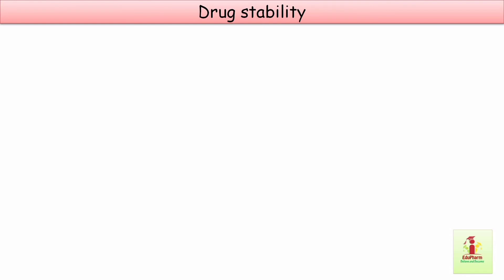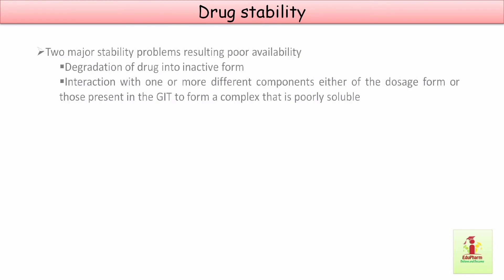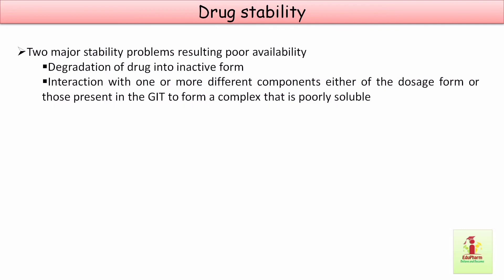The next factor is drug stability. Two major stability problems result in poor bioavailability: first, degradation of the drug into an inactive form; and second, interaction with one or more components of the dosage form or those present in the gastrointestinal tract to form a poorly soluble complex.